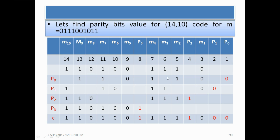We add the bits at positions 3, 5, 7, 9, 11, and 13 using modulo 2. When calculating P0, there is no initial value for P0 at position 1, so we simply count whether the number of ones is even or odd. The number of ones is 4, which is even, so parity bit P0 is 0.